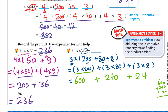Adding 600 plus 240 plus 24: 0 plus 0 plus 4 is 4, 0 plus 4 plus 2 is 6, and 6 plus 2 is 8. So the answer is 864. I hope you guys enjoyed this lesson — have a nice day, goodbye!